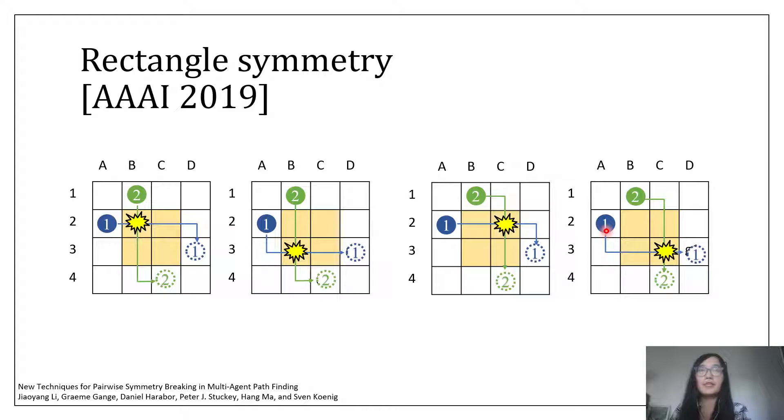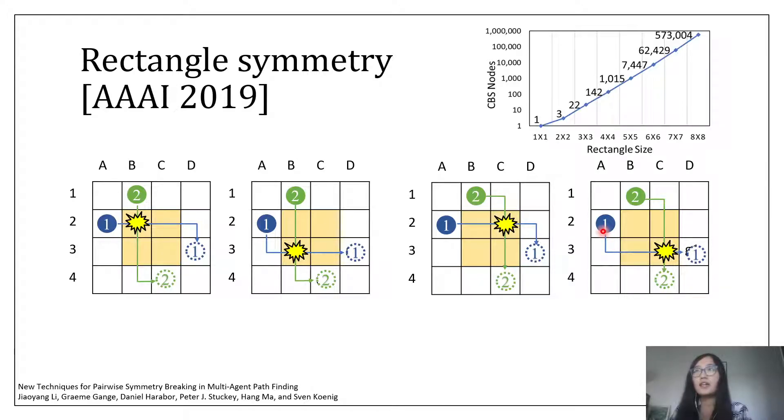And CBS actually has to try many combinations of these shortest paths, finally realizing that one of the agents has to wait for one time step to resolve all collisions between these two agents. Even worse, if the size of the yellow area increases, then the size of the CBS tree also grows exponentially.